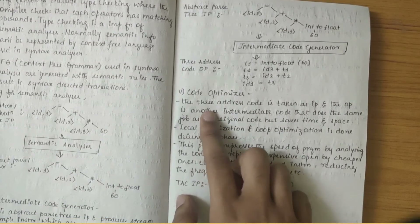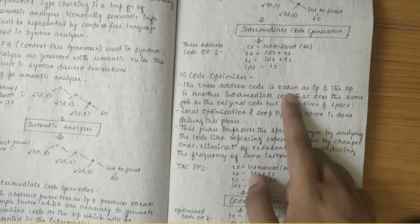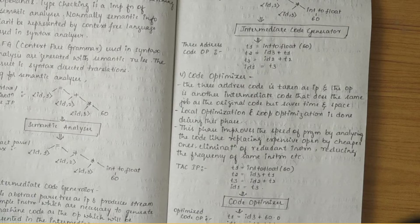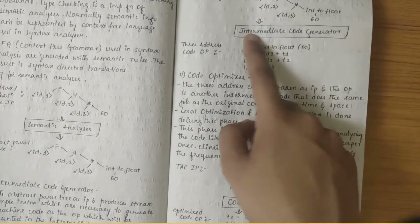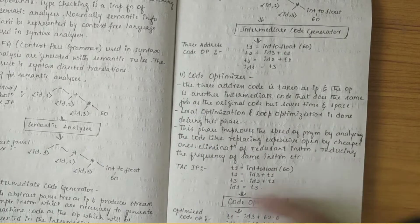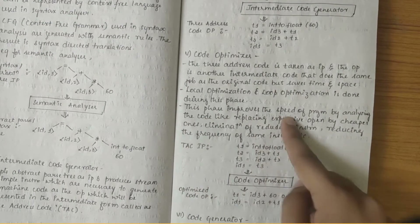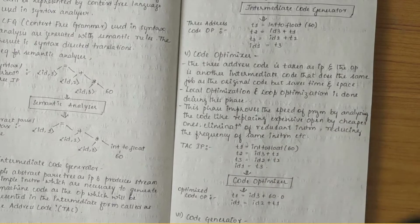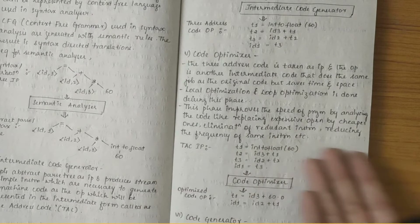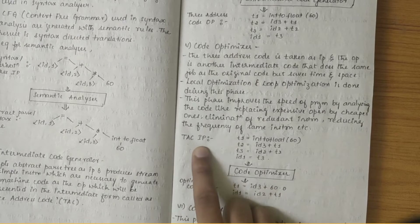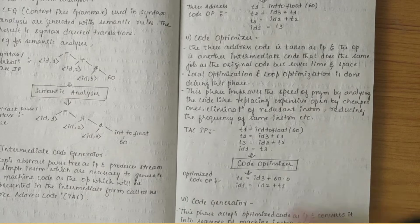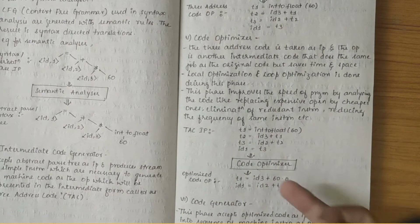The next phase is the code optimizer. The three-address code is taken as input and the output is another intermediate code that does the same job as the original code but saves time and space. It deals with local optimization and loop optimization. This phase improves the speed of the program by replacing expensive operations with cheaper ones, eliminating redundant instructions, or reducing the frequency of repeated instructions. The three-address code is fed as input and optimized code is output — for example, four lines of instruction are reduced to two.